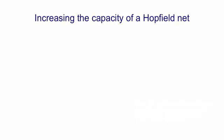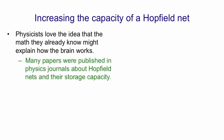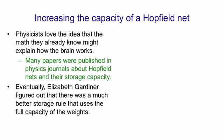Before we get to that I want to talk a little bit about ways that physicists discovered for increasing the capacity of a Hopfield net. As I said, this was a big obsession with the field — I think it's because physicists really love the idea that math they already know might explain how the brain works. So there were a very large number of papers published in physics journals about Hopfield nets and their storage capacity. Eventually a very smart student called Elizabeth Gardner figured out that there was actually a much better storage rule if you were concerned about capacity, and that it would use the full capacity of the weights.